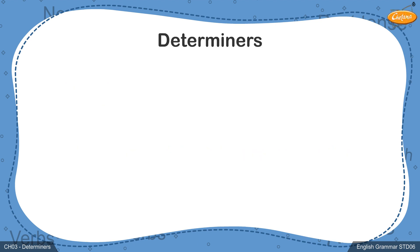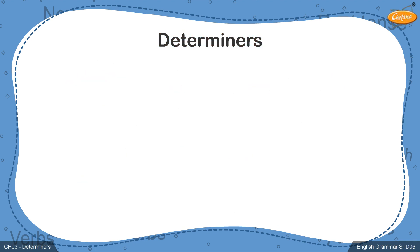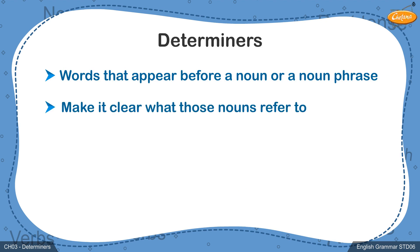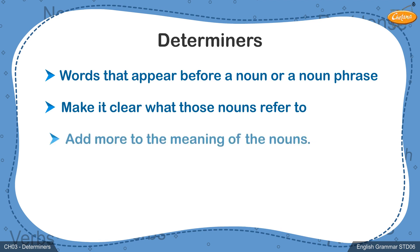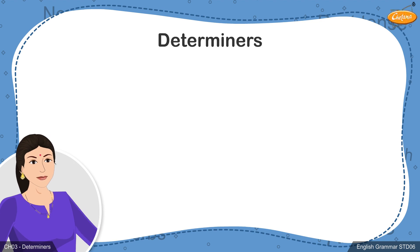Let's now learn the definition of a determiner. Determiners are words that are placed before the nouns or a noun phrase to make it clear what the noun refers to. In other words, they add to the meaning of the nouns. Students, let's take a look at the different kinds of determiners that appear before nouns.